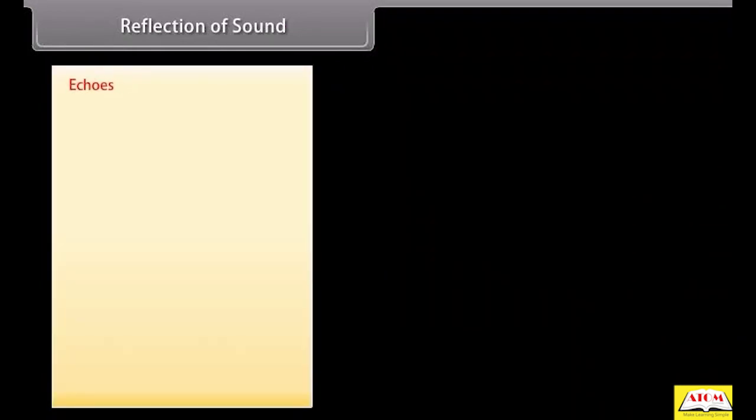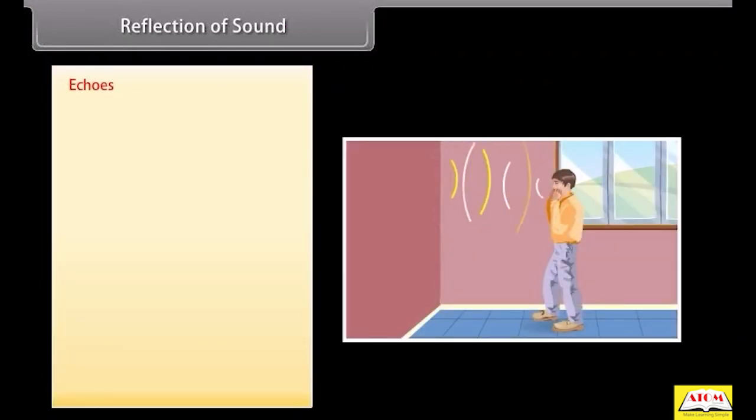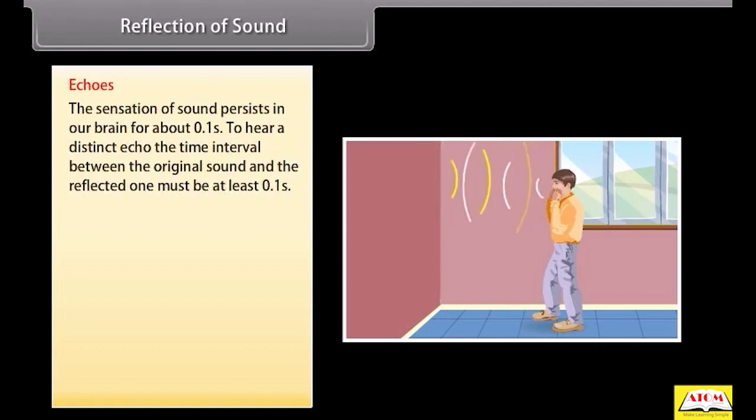Echoes. Echoes are produced by the reflection of sounds from such surfaces. The sensation of sound persists in our brain for about 0.1 second. To hear a distinct echo, the time interval between the original sound and the reflected one must be at least 0.1 second.